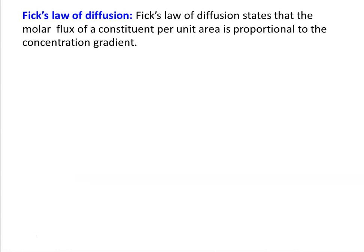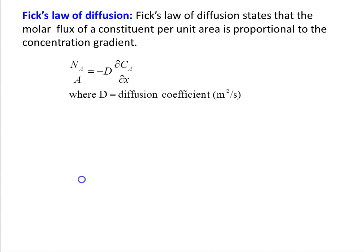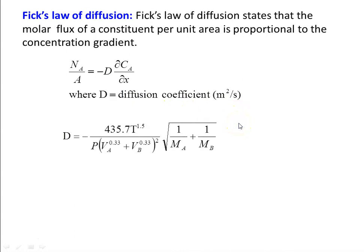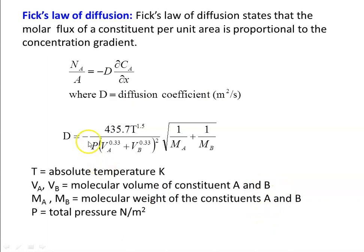Finally, Fick's law of diffusion. Fick's law states that the molar flux of a constituent per unit area is proportional to the concentration gradient: N_A/A = −D·(∂C_A/∂x), where ∂C_A/∂x is the concentration gradient in the x direction and D is the diffusion coefficient. If the diffusion coefficient is not given in the problem, it can be found using the formula involving temperature T, pressure P, volumes V_A and V_B of constituents A and B, and molecular weights M_A and M_B. In most cases, the diffusion coefficient will be given in the problem.